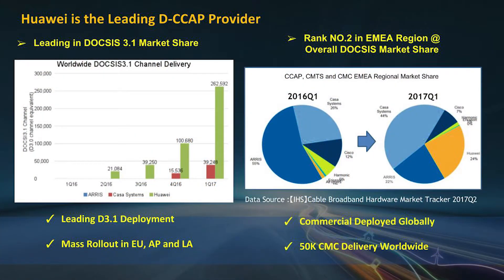In this slide I want to put some numbers to what I've been talking about. In terms of DOCSIS 3.1 channel delivery, in the first quarter of 2017 we delivered more than 262,000 channels worldwide, making us the leading vendor in that space by far. The pie chart shows we've grown from a very small percentage to a 24% market share as of Q1 2017. We have installed about 50,000 CCAP nodes deployed in either the cable plant or MDUs, making us the leading vendor with the most 3.1 deployments around the world.